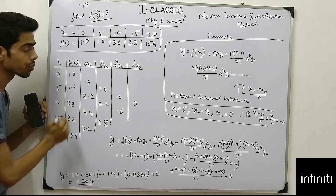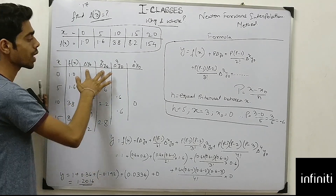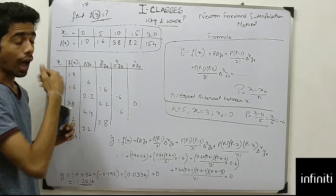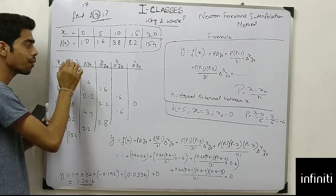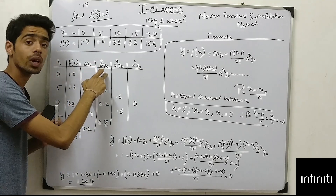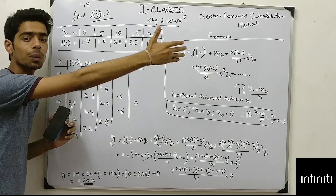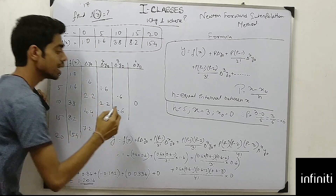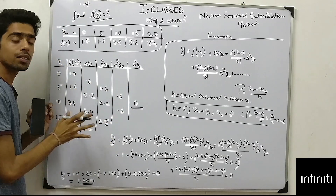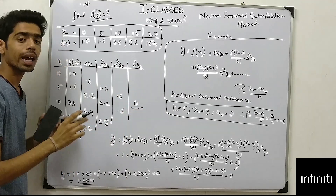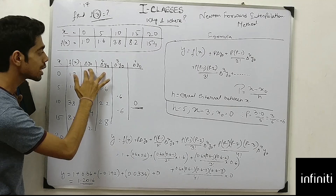The rest of the table includes delta y0, delta squared y0, delta cubed y0, delta to the power 4 y0, and further. Delta is a difference value of fx (or y). Delta squared y0 is just a difference of delta y0, and delta cubed y0 is a difference of delta squared y0. I will proceed until I get a single value or zero.